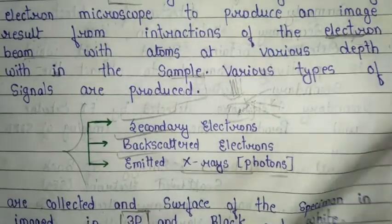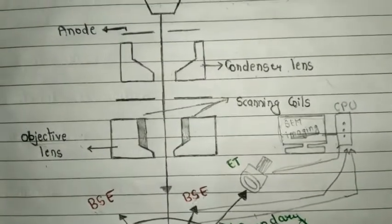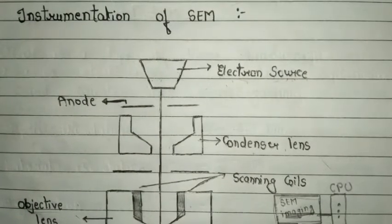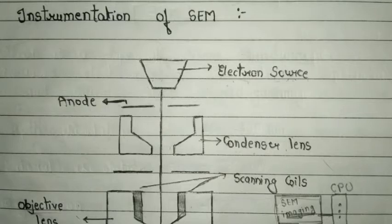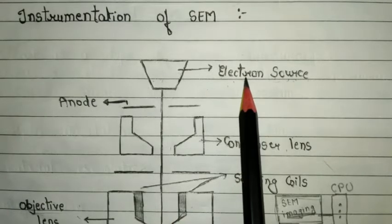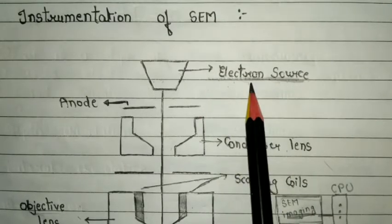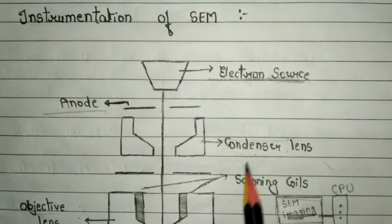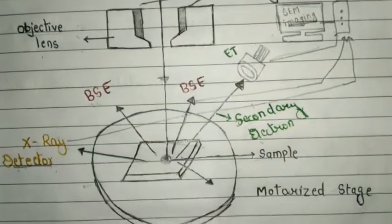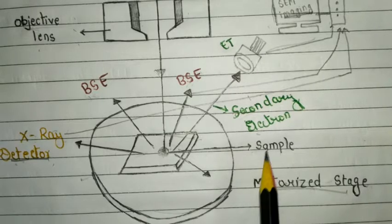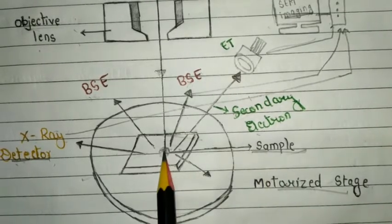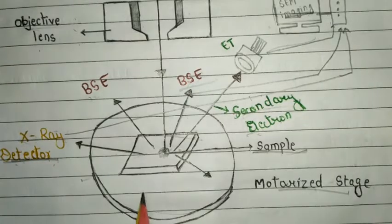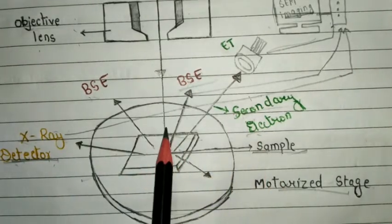The instrumentation part of the scanning electron microscope is very important. When we discuss the instrumentation of SEM, we need to know about every single part. The parts include: electron source, electron beam, anode, condenser lens, objective lens, scanning coil, and a motorized stage in which we place the sample specimen. There are also secondary electron, backscatter electron, and X-ray detectors. All these signals are obtained after the electron beam is bombarded onto the sample.